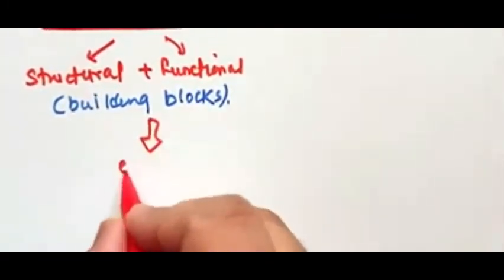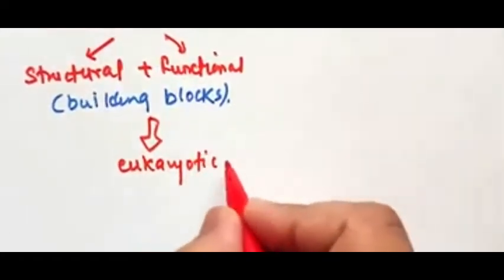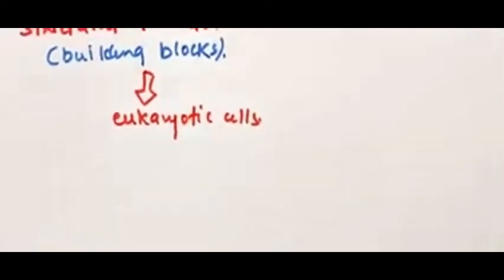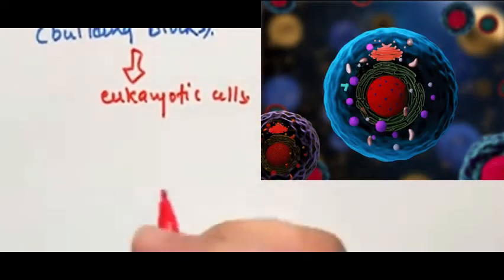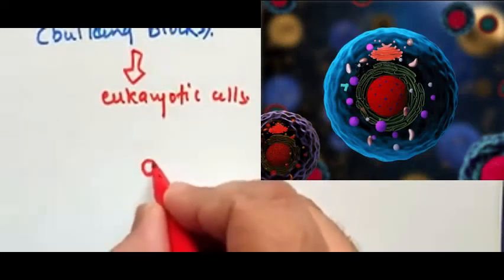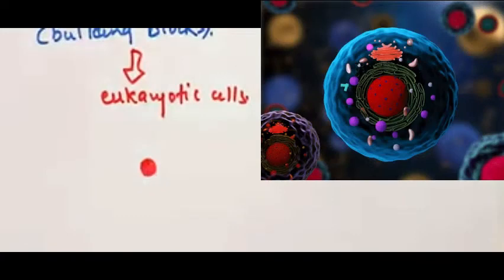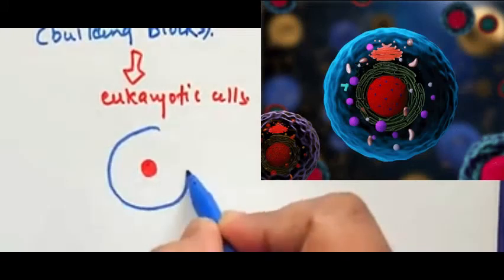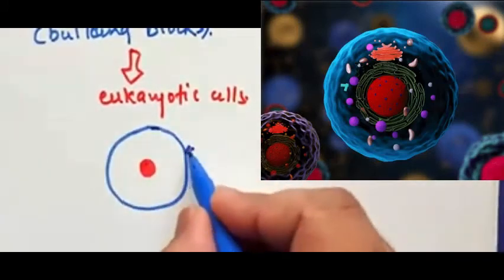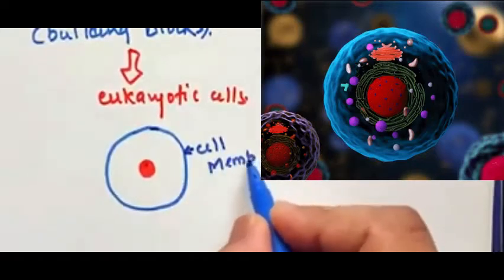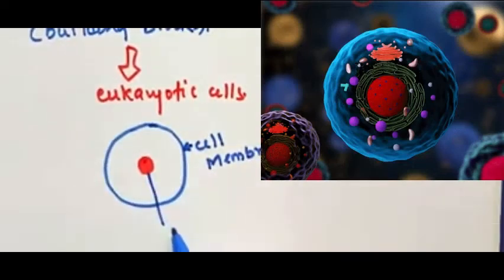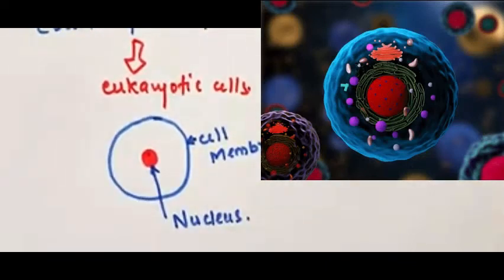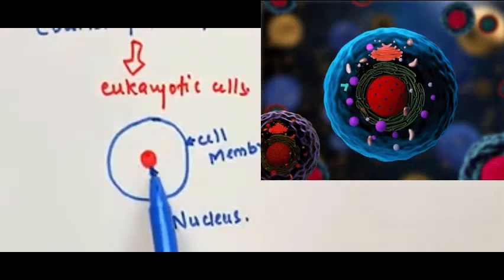The single cell of the human body is basically a eukaryotic cell. A eukaryotic cell means that the cell has a nucleus. Centrally located within the cell is a nucleus which contains DNA, and this centrally located nucleus is surrounded by a membrane — we'll call this the cell membrane. The red color in the diagram represents the nucleus.